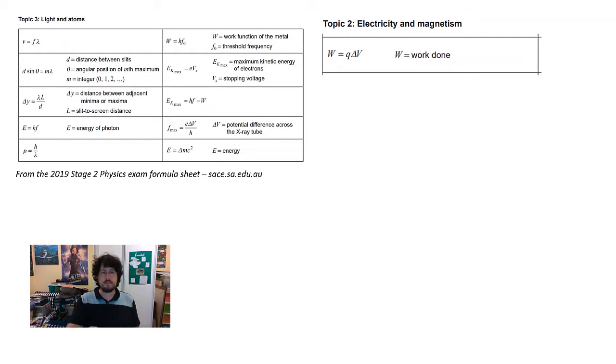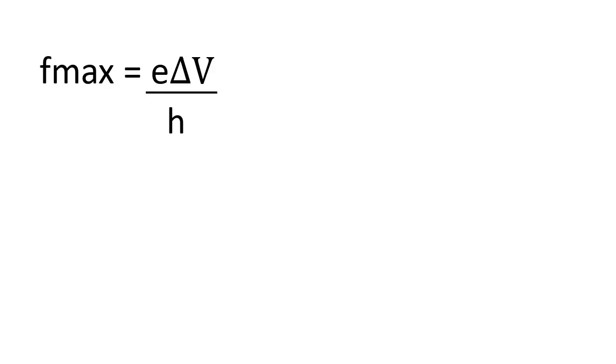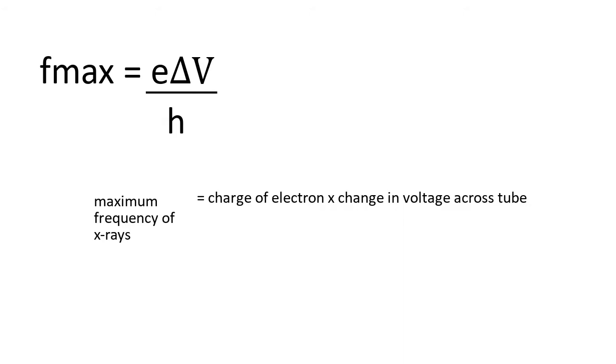So the key formula associated with it is F_max is equal to E delta V on h, which is the maximum frequency x-ray is equal to the charge of an electron times the change in voltage across the tube, or the potential difference across the tube, divided by Planck's constant.